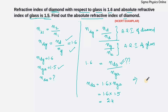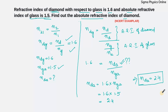This implies the refractive index of diamond with respect to air is 2.4. So this is your answer. I hope you have understood this. If you like the video, please give it a big thumbs up, share it with your friends, and subscribe to the channel. Thanks for watching. Bye-bye.